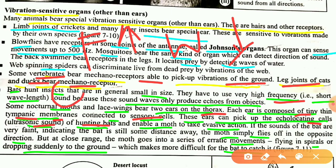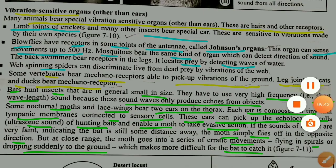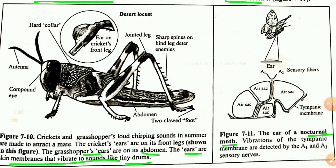When a moth hears a bat's ultrasound, it begins erratic movement — flying in spirals, dropping suddenly, and making unpredictable maneuvers — so the bat cannot catch it. Here in the diagrams you can see crickets with ears present in their legs and limbs, and in the second diagram the nocturnal moth with ears shown in the thorax.